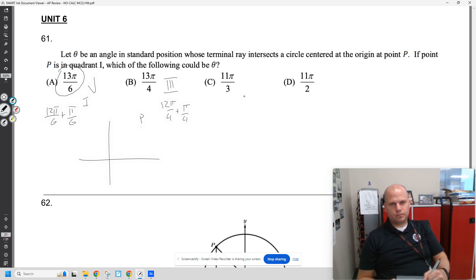1, 2, 3, 4. 11π over 3 is 12π over 3 minus π over 3. 12π over 3 is 4π: 1, 2, 3, 4π. But then minus π over 3 would be in quadrant 4 with a reference angle of 60 degrees.